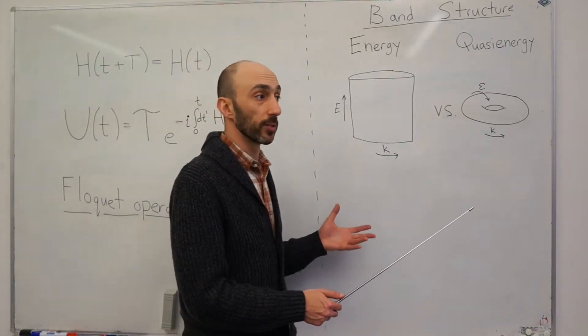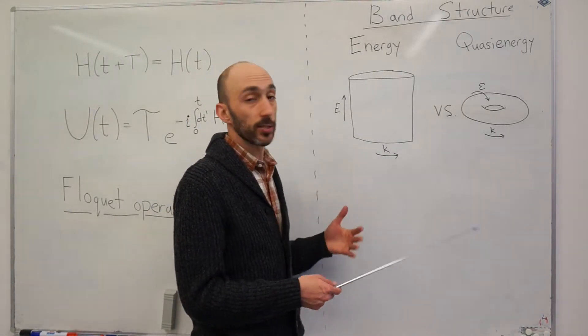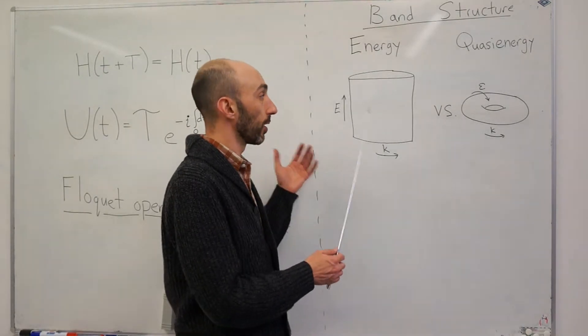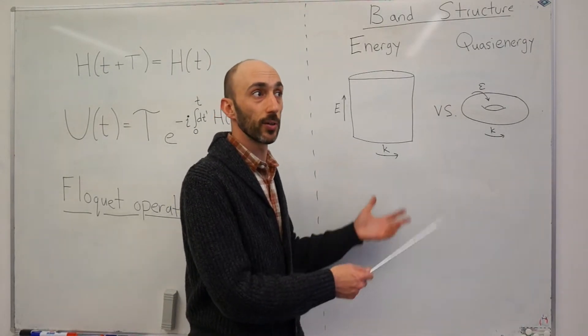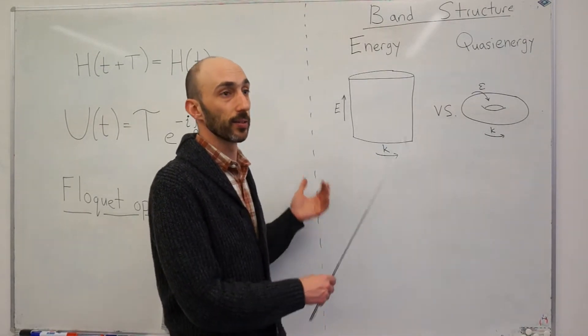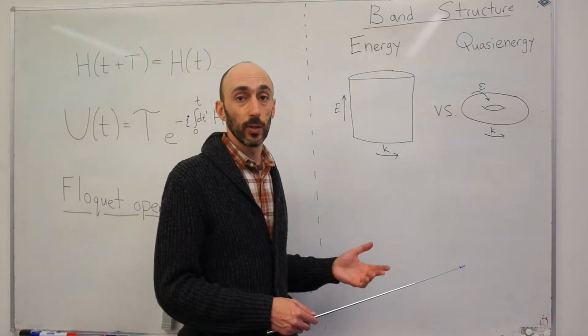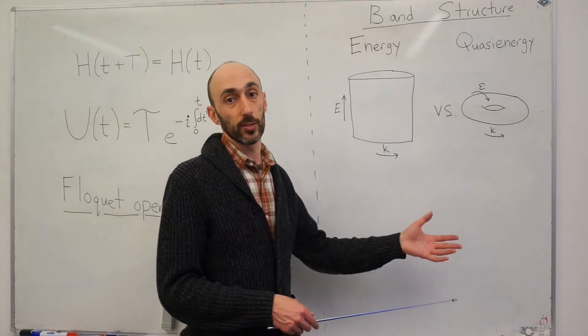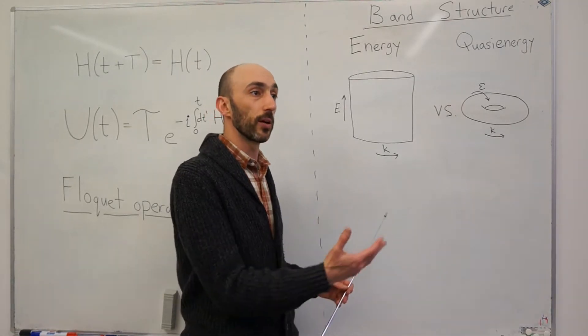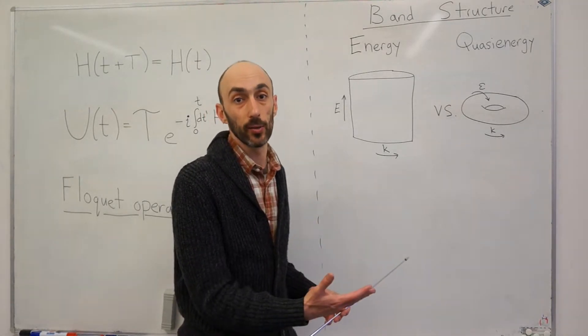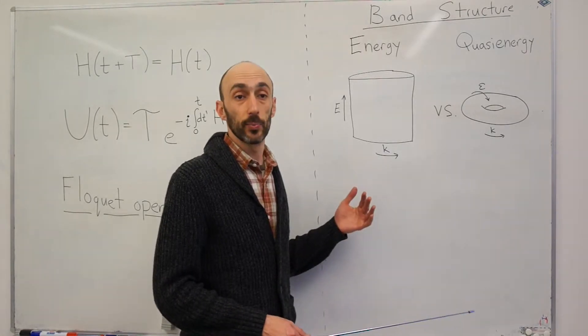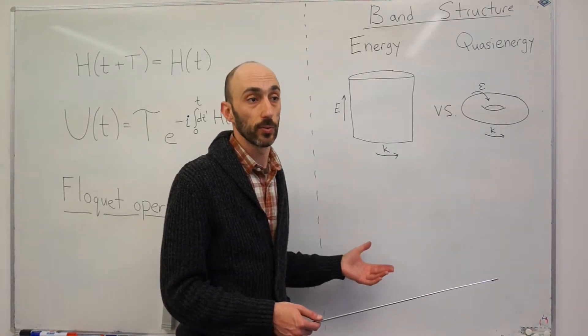And this has many important consequences, and gives rise to phenomena which can arise in periodically driven systems, but cannot arise in non-driven systems. For example, in a two-dimensional system, where the Chern numbers of all bands are zero, if this was a non-driven system, we would expect there are no chiral edge modes. But in fact, in the periodically driven case, it turns out there can be chiral edge modes.